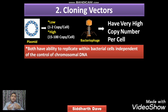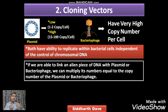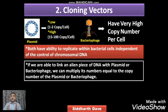Both plasmid and bacteriophage have the ability to replicate within the bacterial cell independently of the chromosomal DNA. They can replicate themselves because the vector has its own origin of replication. If we link our foreign DNA along with the plasmid or bacteriophage, we can multiply our gene of interest equal to the copy number of that particular vector. This is the most important feature — copy number.